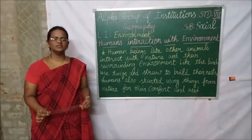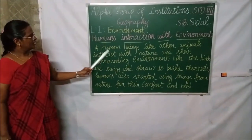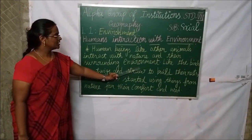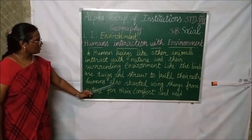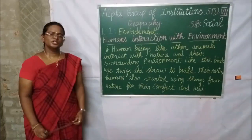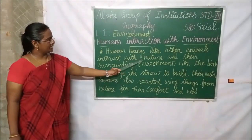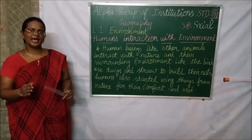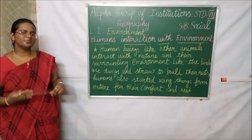Now we are going to see the new topic: humans' interaction with environment. Human beings, like other animals, interact with nature and their surrounding environment. Like birds use twigs and straw to build their nests, humans also started using things from nature for their comfort and need.